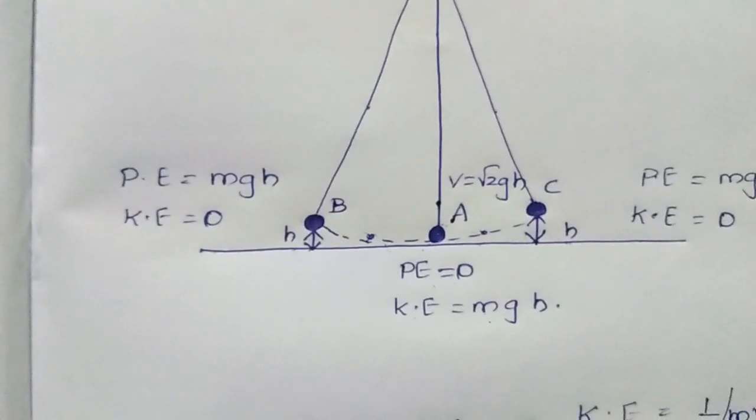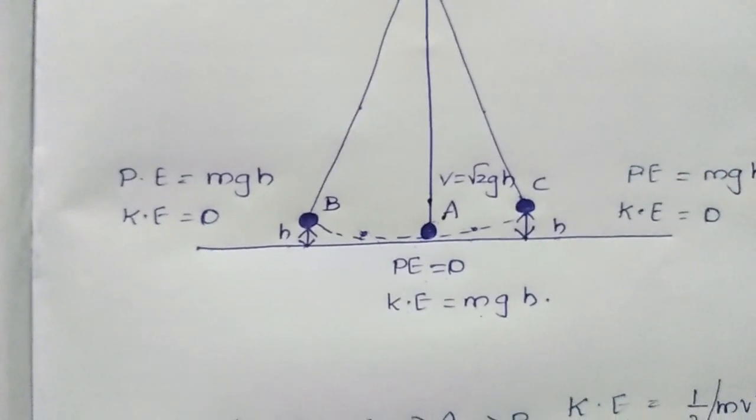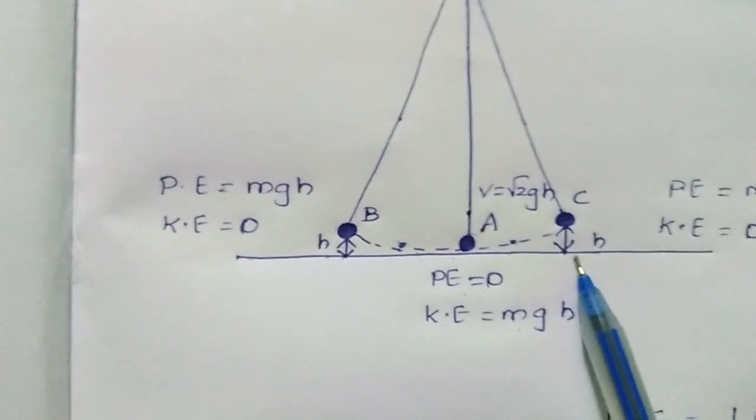Thus, the bob will reach the extreme positions A to B and A to C with equal distances and equal heights.